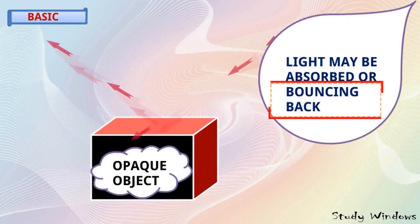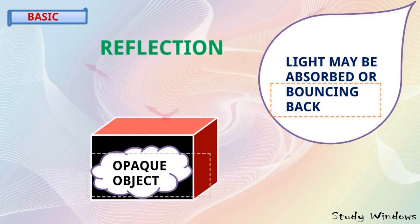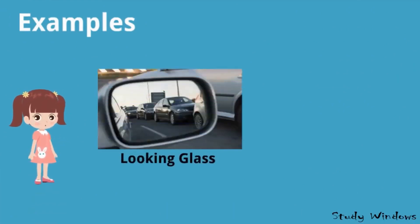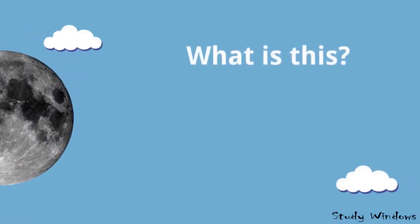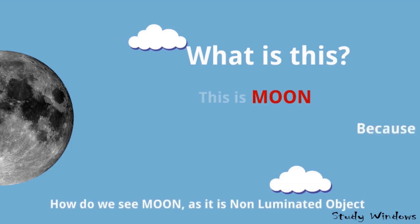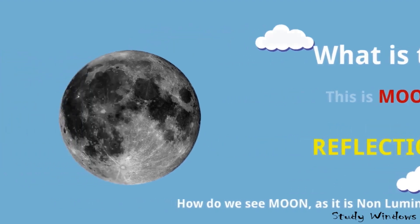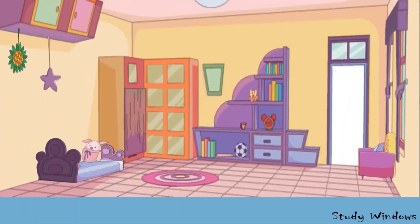If light is absorbed or bouncing back to the same medium, the object is known as an opaque object. If bouncing back, the object should be opaque, and this bouncing back is known as reflection. Look at this image — this is the moon, but the moon is a non-luminous object. How do we see the moon? Because of reflection. Light comes from the sun, falls on the moon, and is reflected back to our eyes.